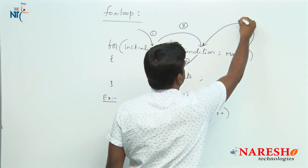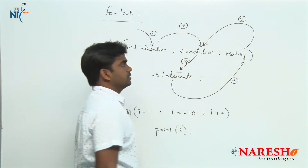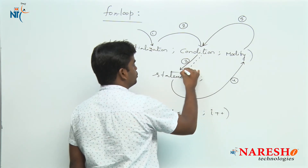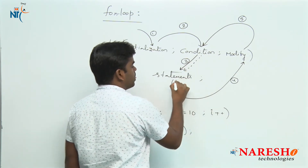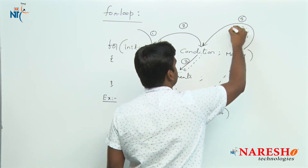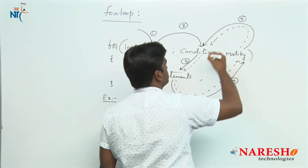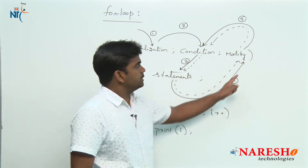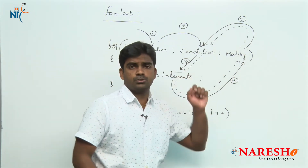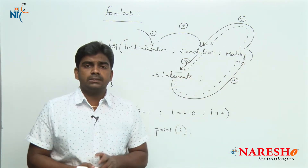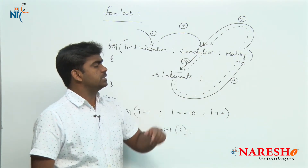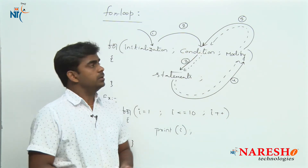After execution of the statements, it will go and modify. After modify, again it will check the condition. If condition is true, the control moves inside, executes statements, goes to modify, and checks condition again. The loop repeats as long as the condition is true. When the given condition fails, the loop terminates.